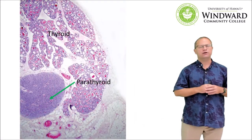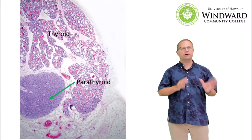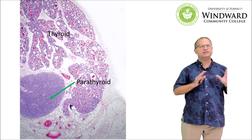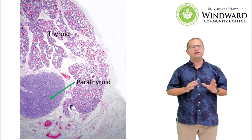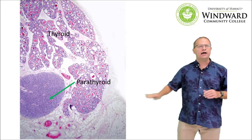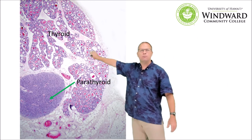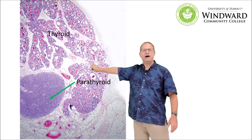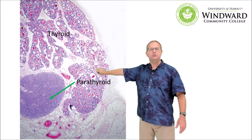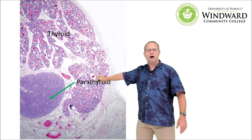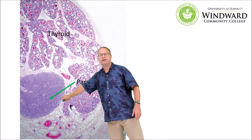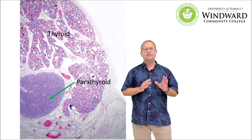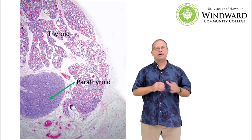Now let's take a look at the histology of the thyroid and parathyroid. At low magnification, we can see the difference between the thyroid and the parathyroid. The thyroid gland is a much more massive gland, made up of little follicles filled with fluid or colloid. On the other hand, the parathyroid is a much denser gland, and that is the gland that secretes parathyroid hormone.